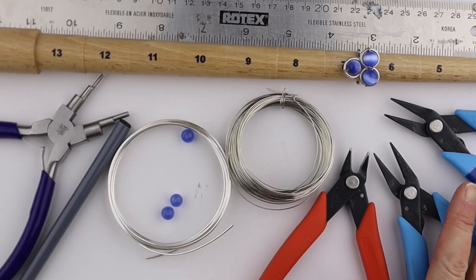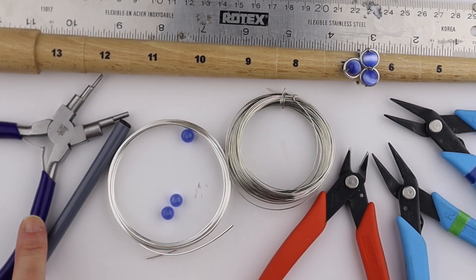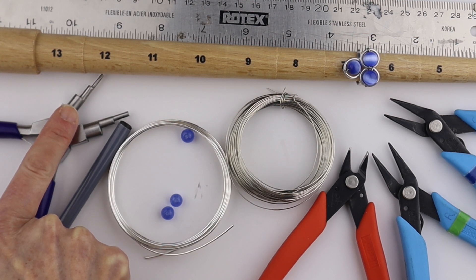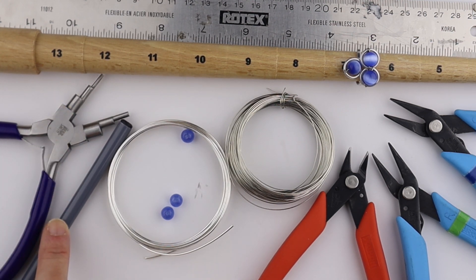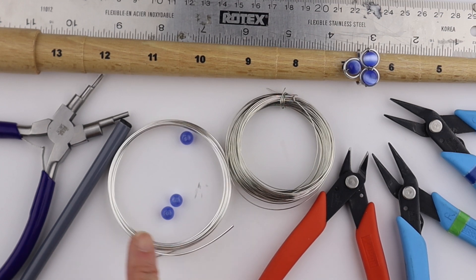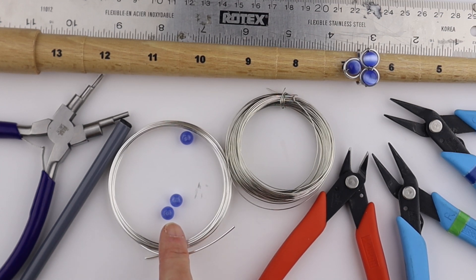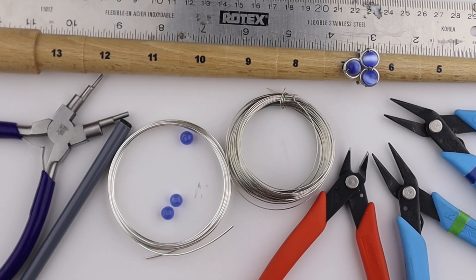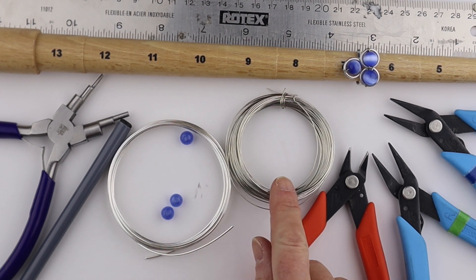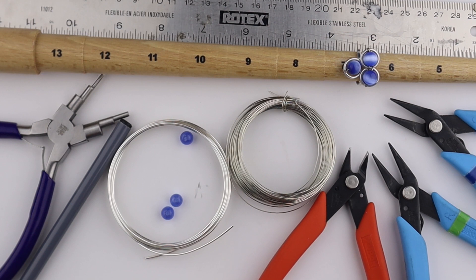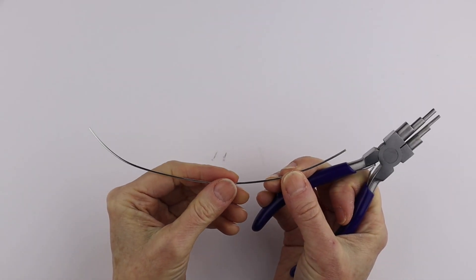So what you're going to need for this project is your ring mandrel, your tools. I have some looping pliers for the larger circles. You can use the end of a pen if you don't have those. I have 16 gauge wire, I have 8 millimeter cat's eye beads. You can also use miracle beads, and I have 24 gauge wire to wrap the beads with.